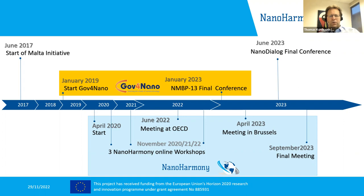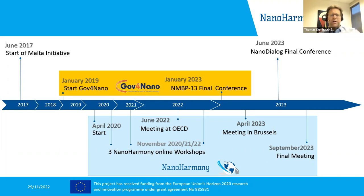Starting from the Malta Initiative, several announcements were made to push forward test guideline development. We had the NMBP-13 projects which started in January 2019, and I was happy to collaborate there with Co4Nano, as well as RisCon, NanoRego, and NanoHarmony. The NanoHarmony project organizing this workshop towards OECD test guidelines started in April 2020.